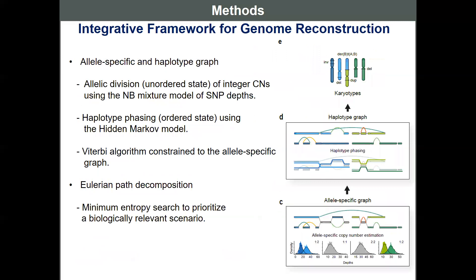Next, we convert the breakpoint graph into a haplotype graph using SNP information. First, we determine allelic division of integer copy numbers using negative binomial mixture models with SNP depth information. In this toy example, figure C shows the SNP depth distribution of each genomic segment, and based on SNP depth distribution, we expand previous breakpoint graph nodes into two allelic nodes. Note that these nodes are not in an ordered state, and the order of the allelic nodes will be determined in the next haplotype phasing steps.